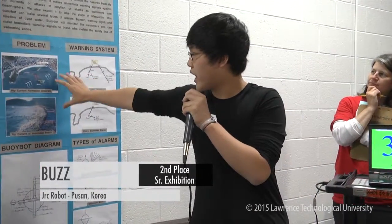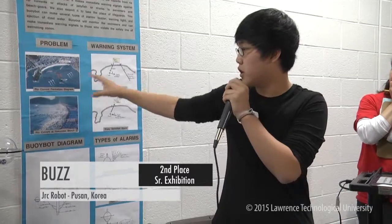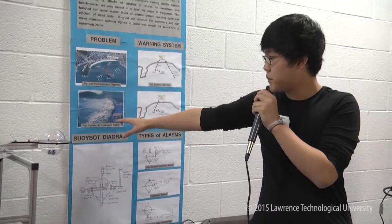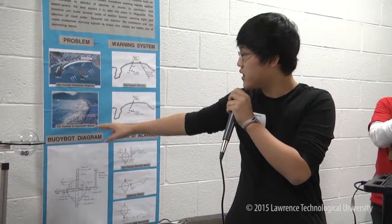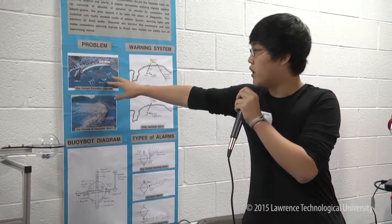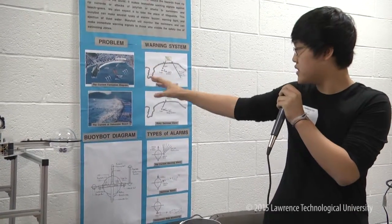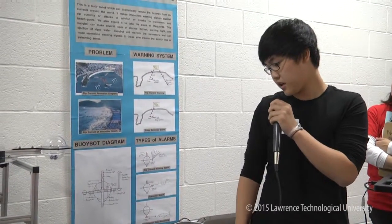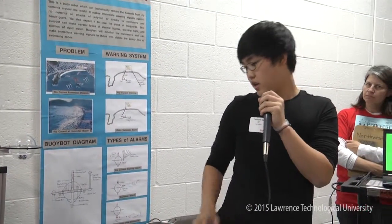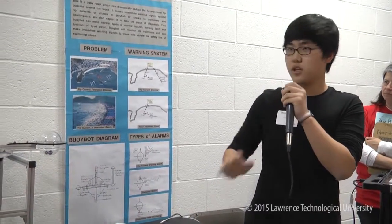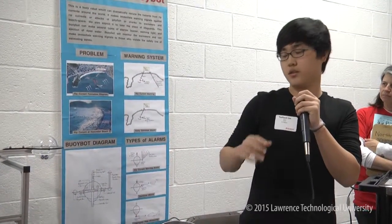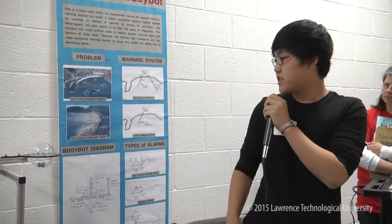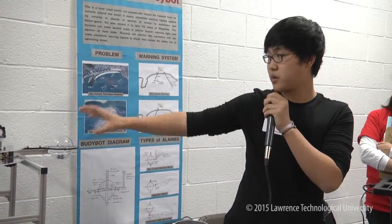The problem we're addressing is rip currents forming at beaches. This is a picture from a few years back when a rip current happened and a lot of people got injured. This is a diagram of how a rip current forms. According to research we read, beach goers tend not to recognize the danger in their surroundings, so that's the cause why we made this robot.